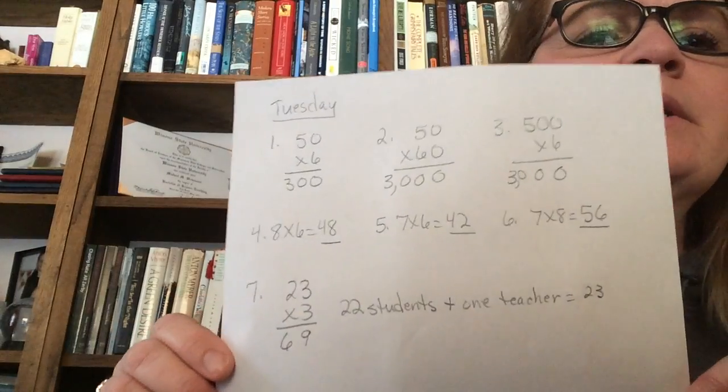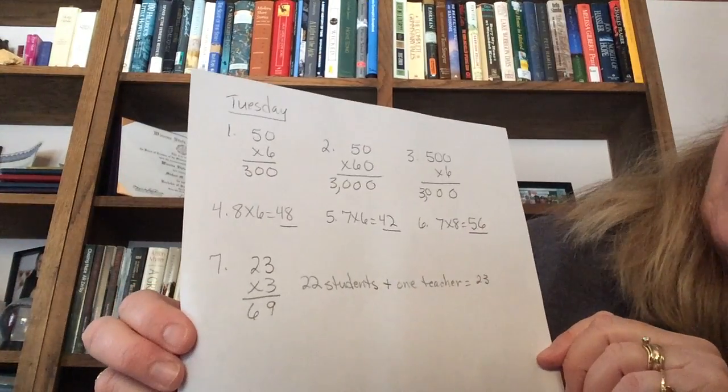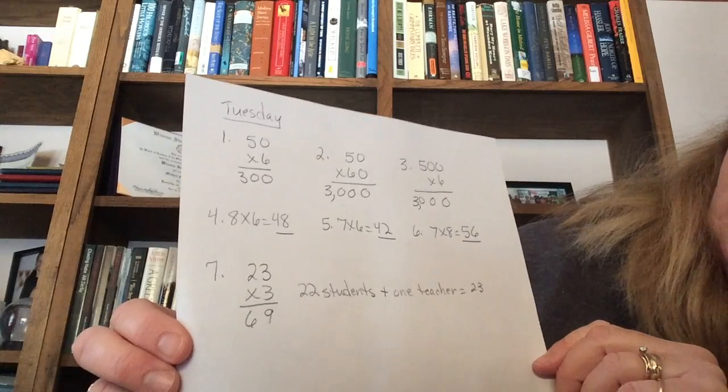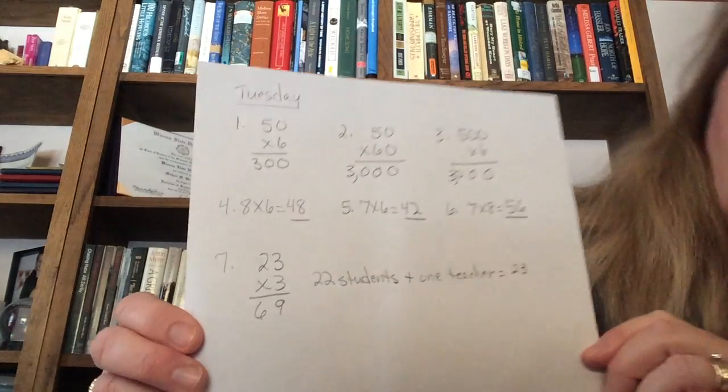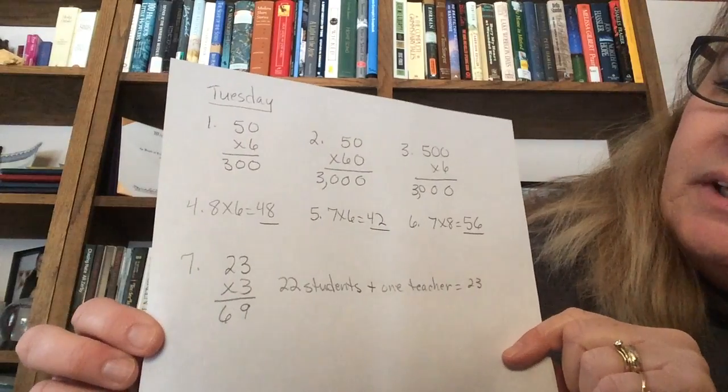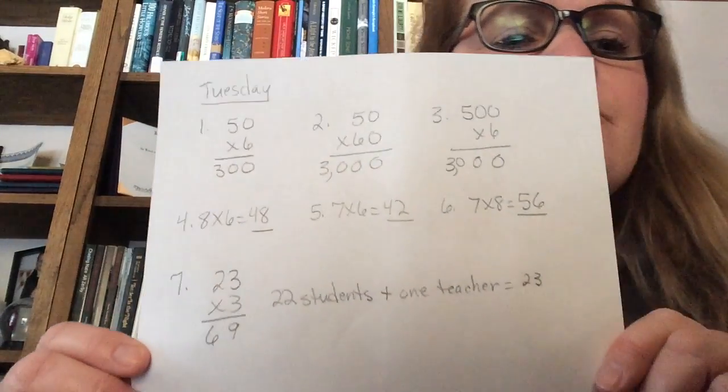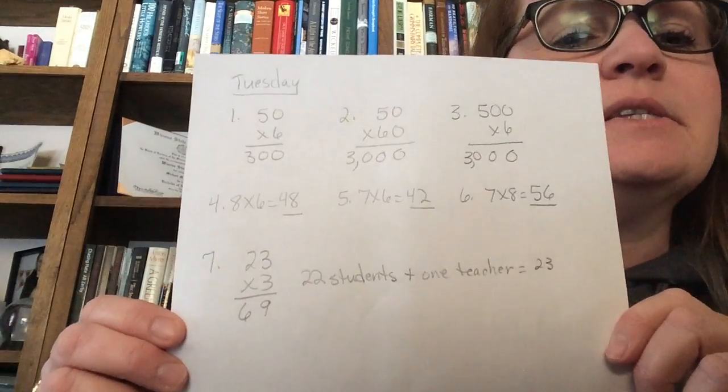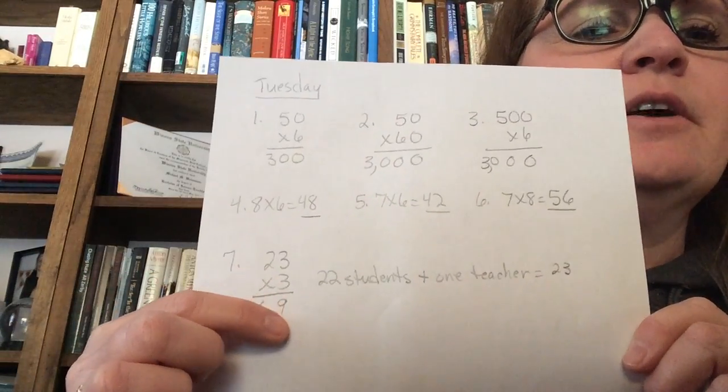On Tuesday, we did some multiplication, to begin with by zeros, and then some regular one-digit multiplication problems. And then on number 7, the problem was about making cookies, three cookies per person, and there were 22 students plus the teacher. That would be 23. And if you multiply that by 3, you get 69. Should have said cookies here, I forgot to label.